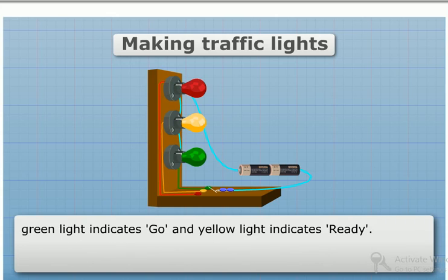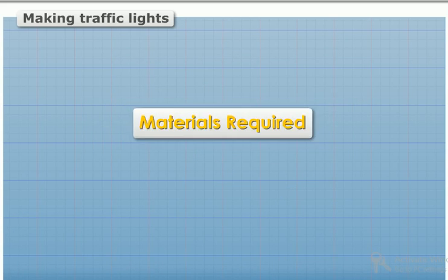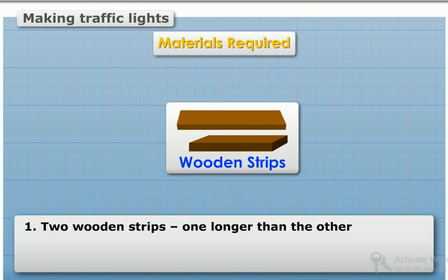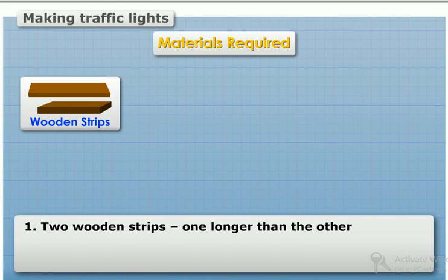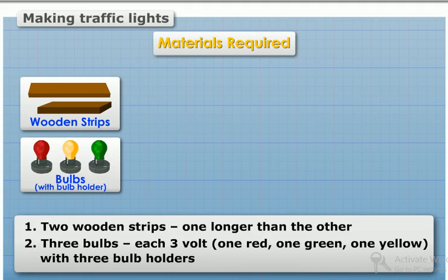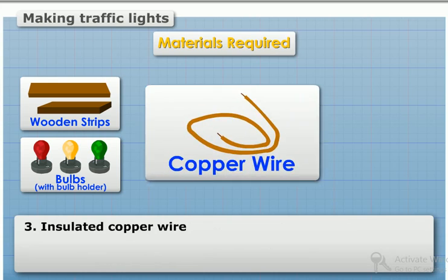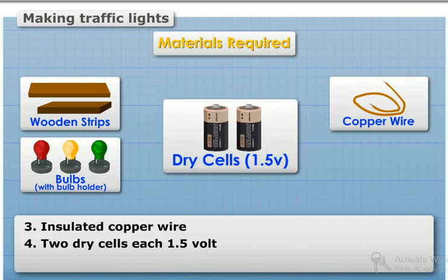Requirements: two wooden strips, one longer than the other; three bulbs, each three volts, one red, one green, one yellow, with three bulb holders; insulated copper wire; two dry cells, each 1.5 volts; four drawing pins; one U-clip; two wood screws.